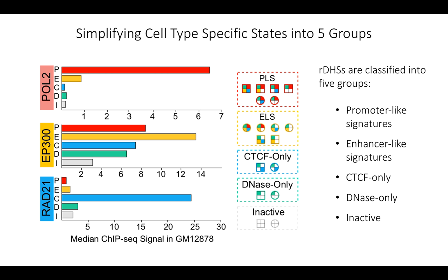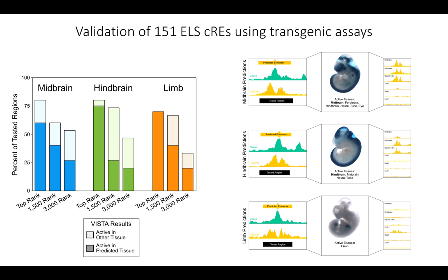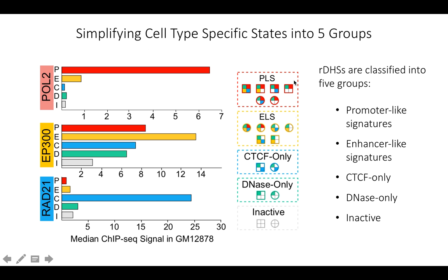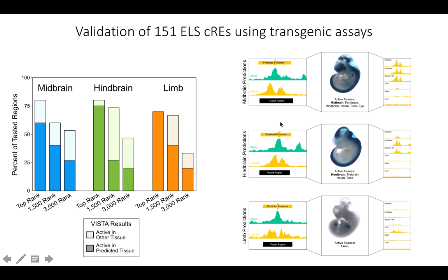This is our new classification scheme. We take these simplified groups: promoter-like signatures (PLS), enhancer-like signatures (ELS), CTCF-only, and a group of DNase-only — and apply this to all the CREs identified in the genome. We were also able to experimentally validate this classification scheme. The ELS CREs annotated in mouse were experimentally tested in embryonic mouse transgenic assays by Len Pennacchio and Axel Visel. Our high-ranking ELS CREs tended to have greater experimental success than the lower-ranking ones.